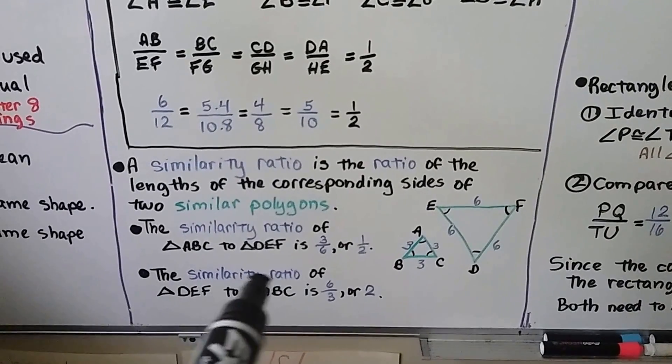The length of a real boxcar over the length of the toy model should equal the height of a real boxcar over the height of the toy model. Make sure the ratios compare corresponding measures - length over length, height over height. The real one is 50 feet, the toy model is 7 inches. X is the height of the boxcar in feet, and 2 is the height of the toy model in inches.